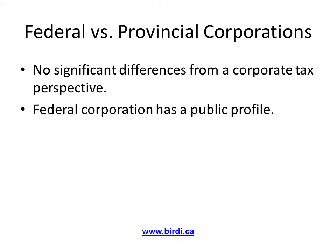A federal corporation can be searched easily on the Industry Canada website. Some of the details that can be viewed by the public are the director's name, addresses, the date of incorporation, and the status of the corporation. On the other hand, a provincial corporation is more private.